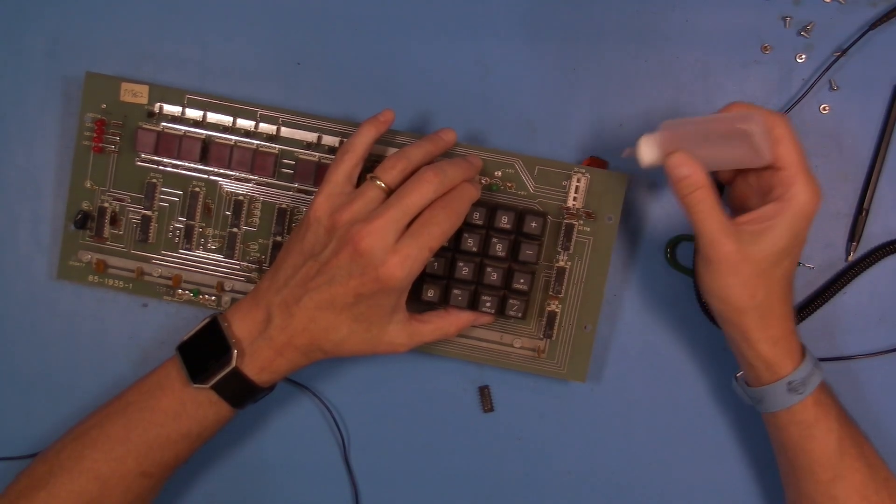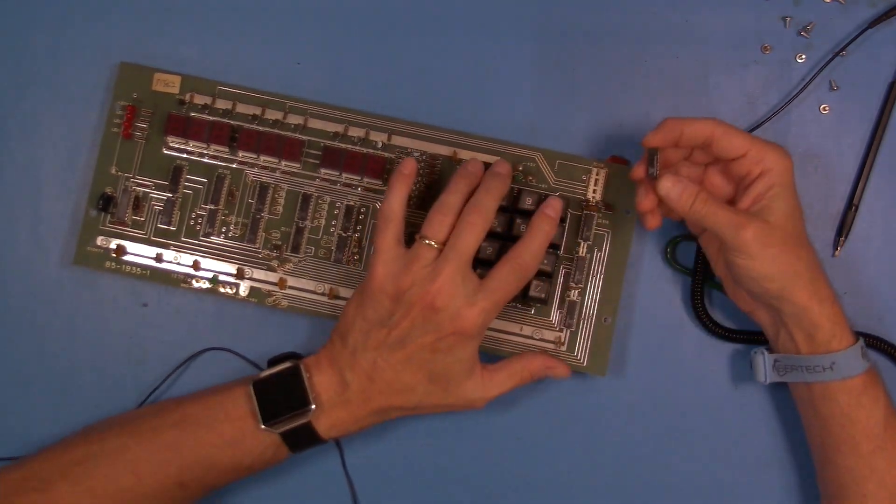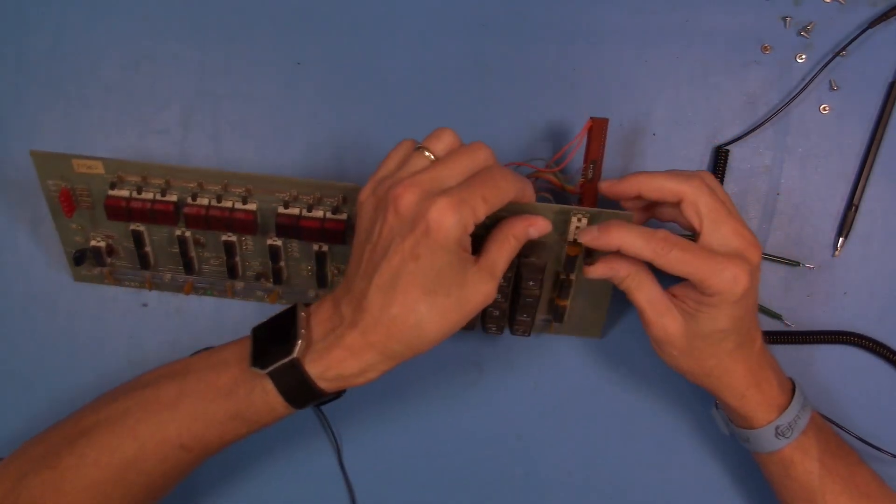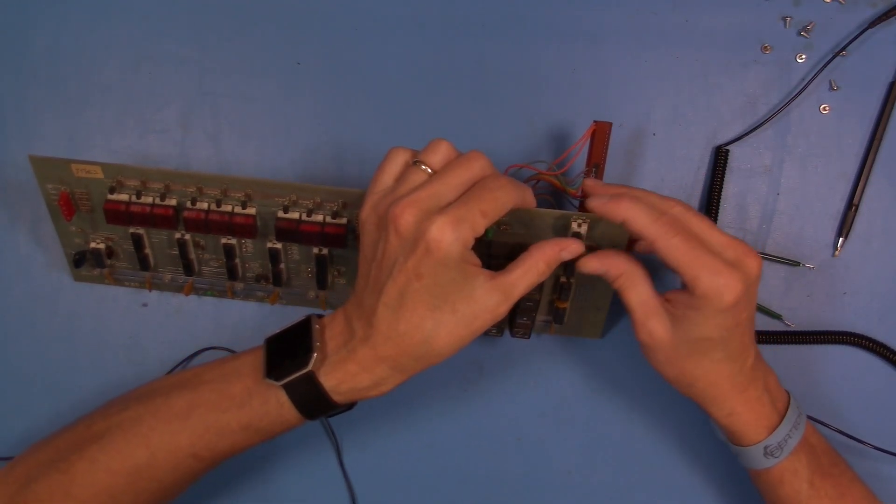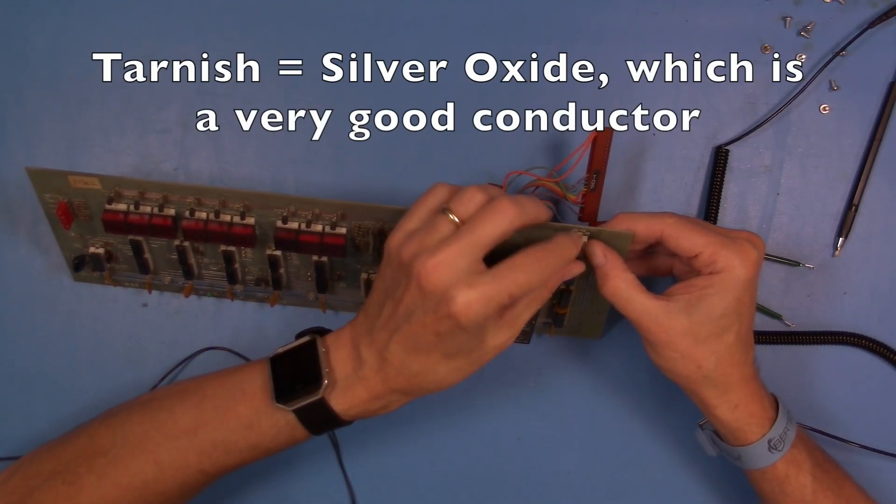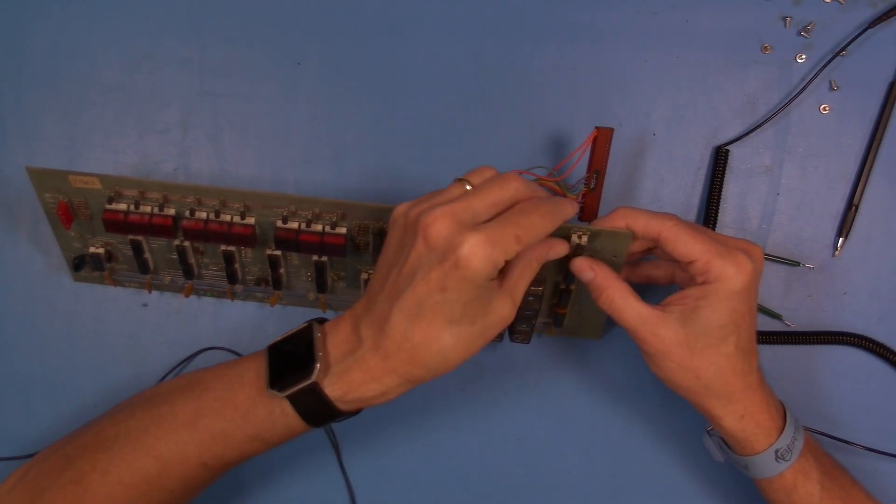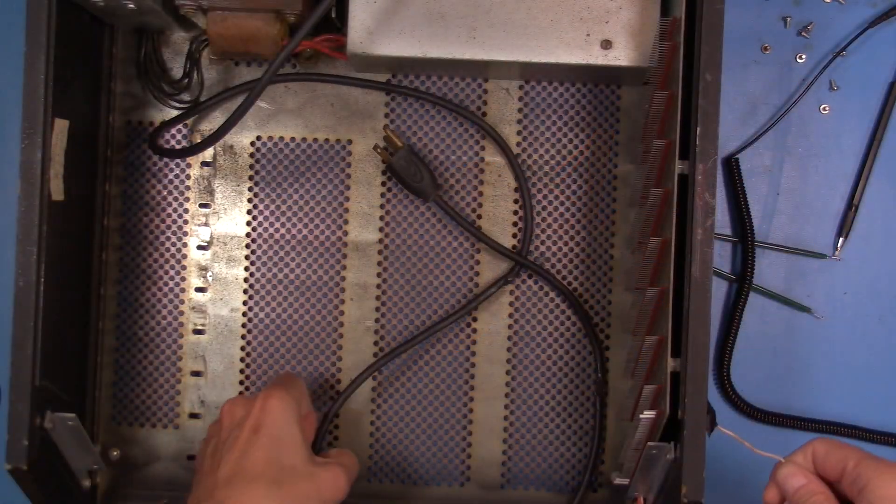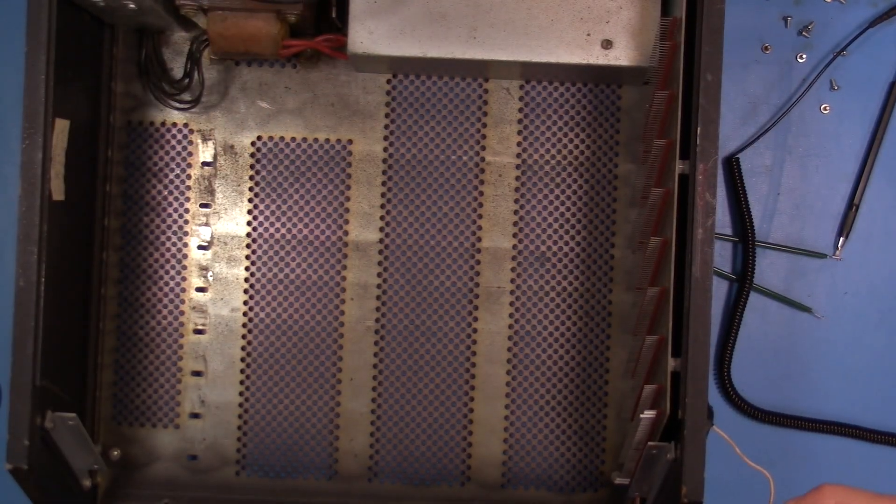And so actually what we're seeing with that black is we're seeing silver tarnish. And in reading about tarnish, it actually is highly conductive. So this is not something that was likely to cause a problem anyway. So I'm not going to do that to all the chips, but just kind of did that with one as an experiment.